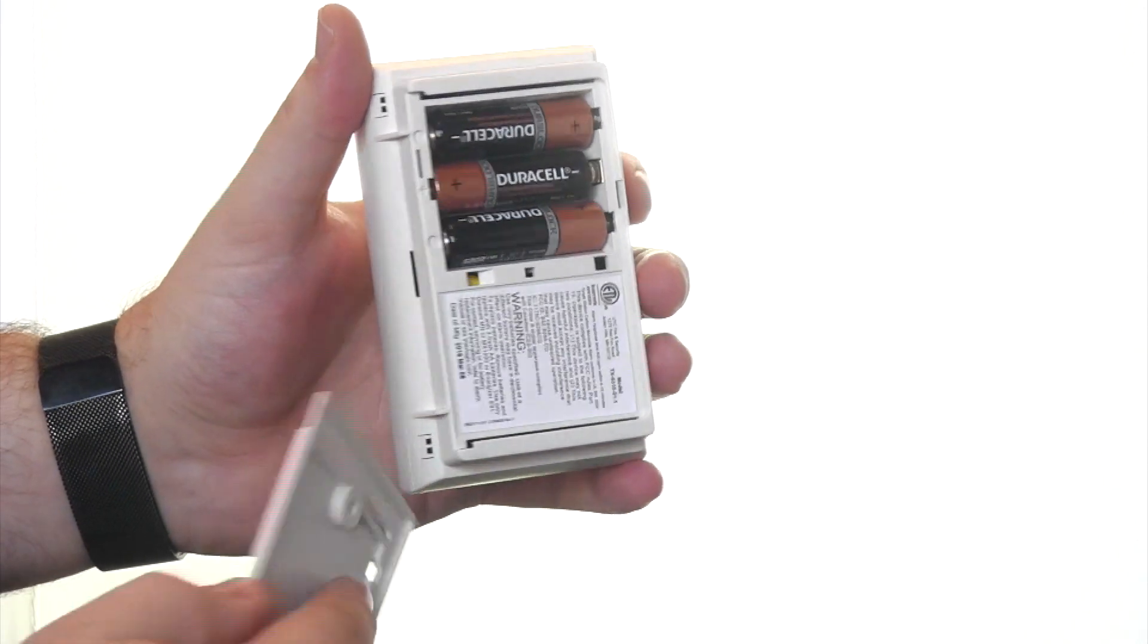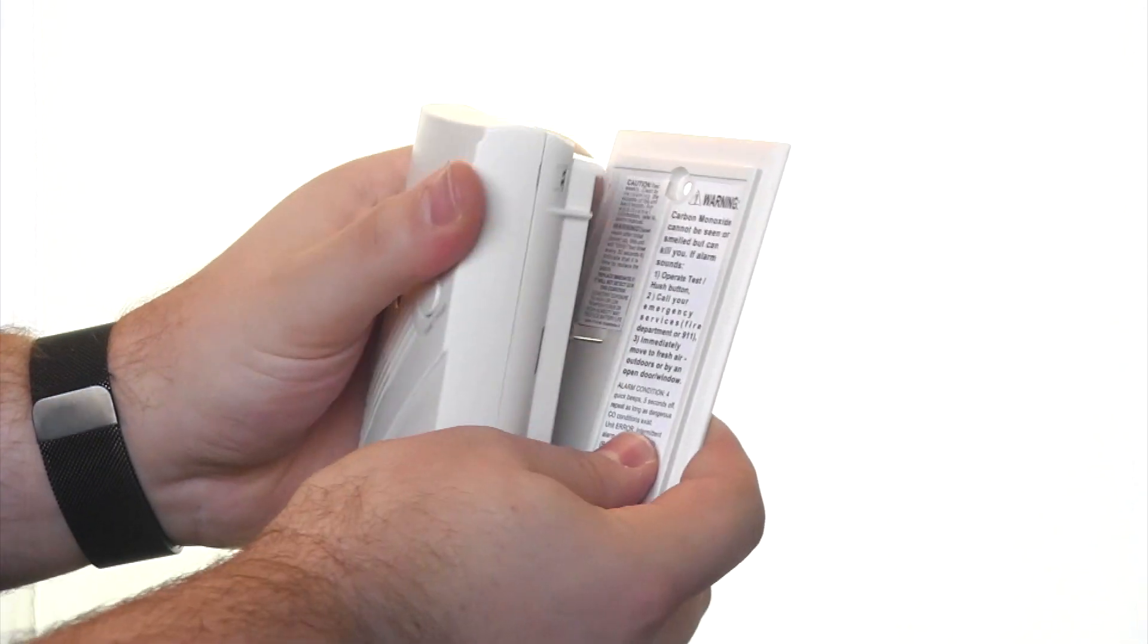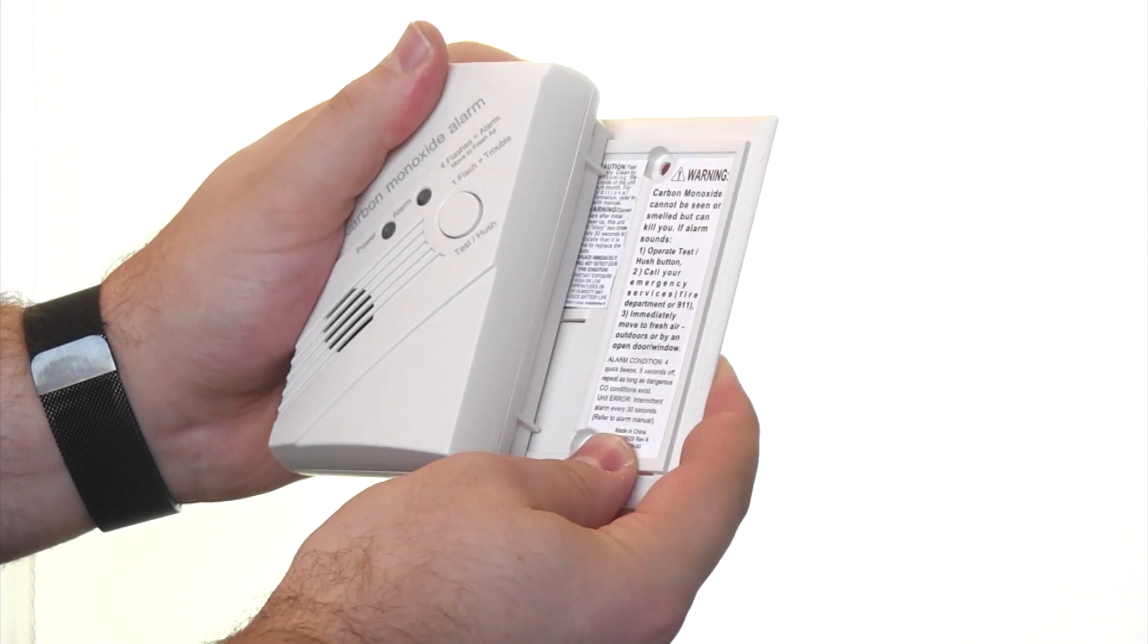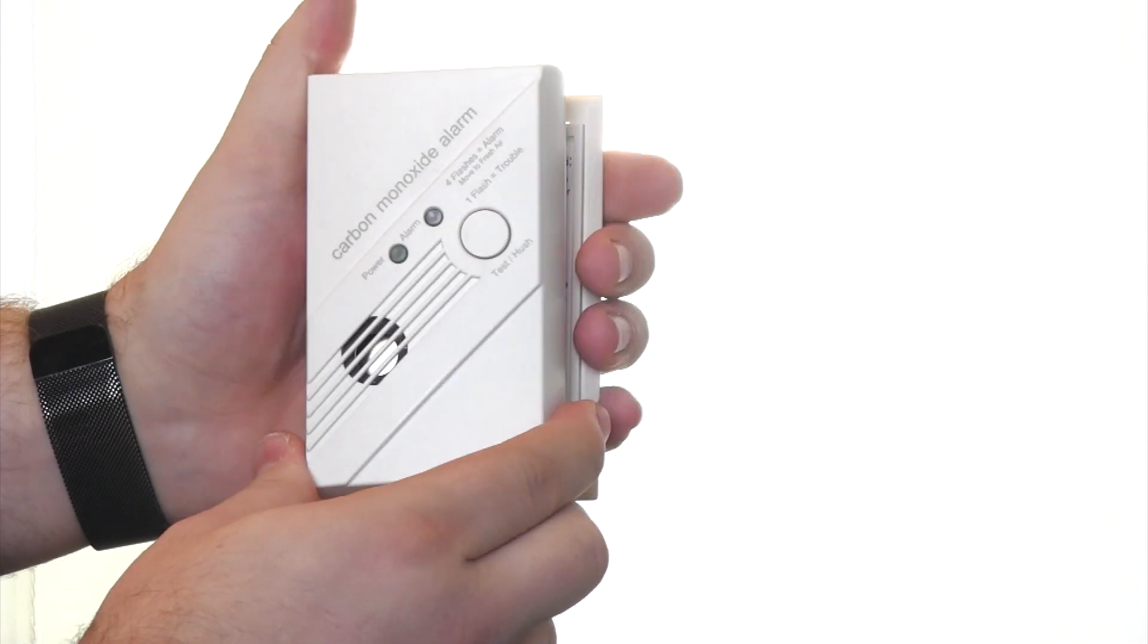When we reattach the base plate, we want to ensure that we go on tight. If we're loose or not on all the way, the carbon monoxide detector will report a tamper.